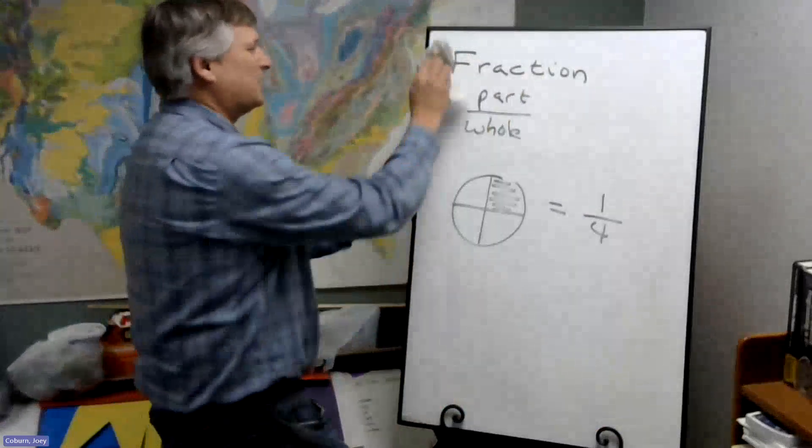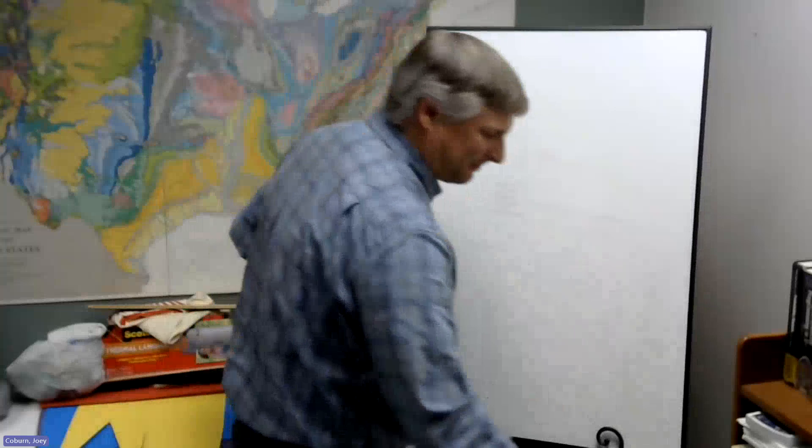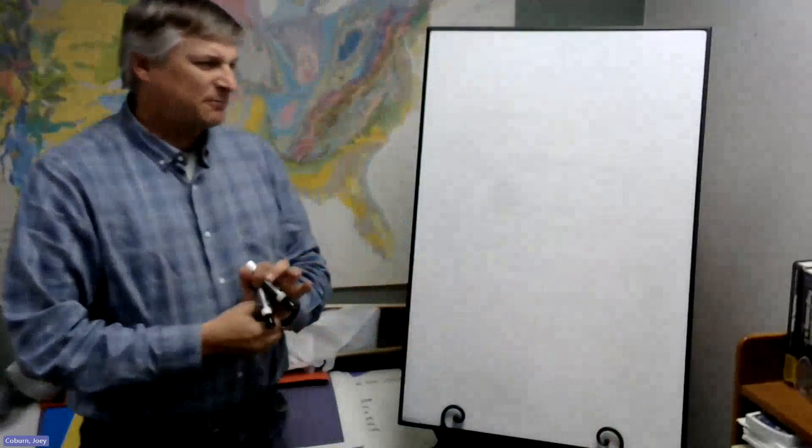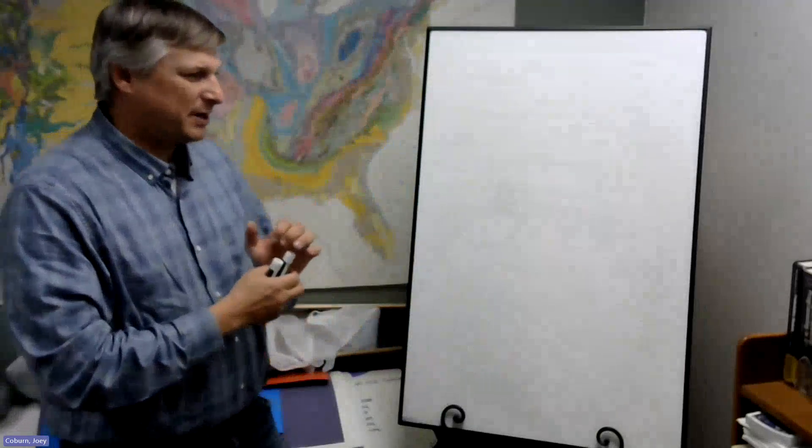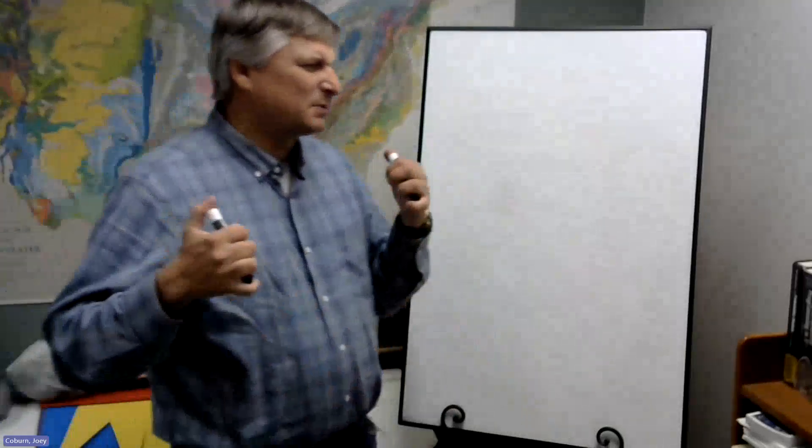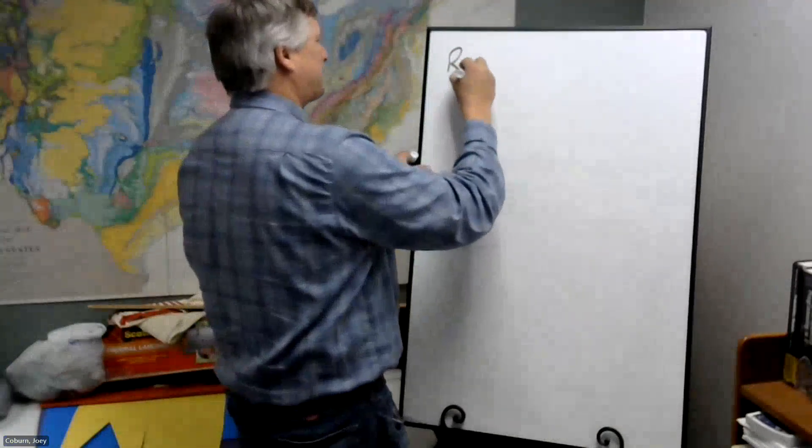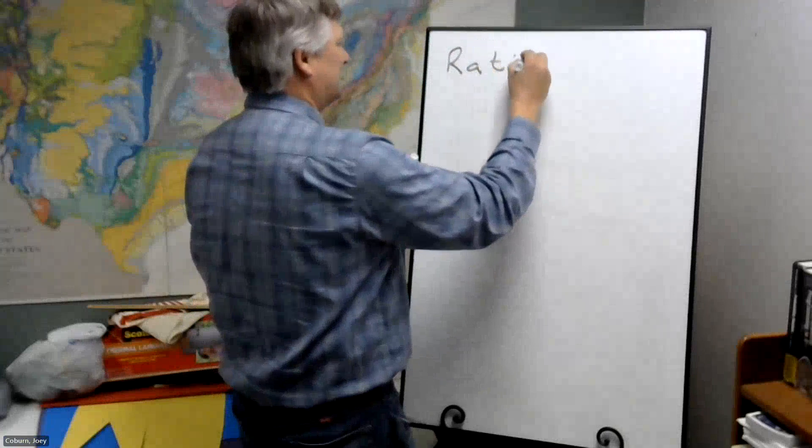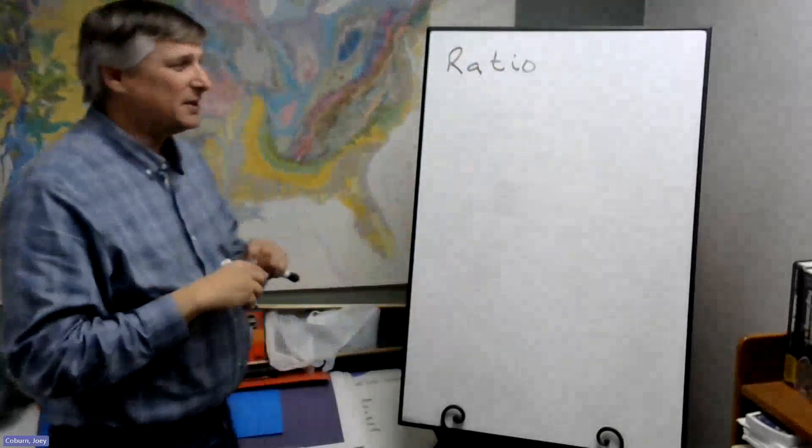Now, a ratio is kind of like a fraction. Where a fraction requires something being a part of something else, a ratio is really comparing two quantities of the same kind of objects or subcategories. So for a ratio, suppose we have this.